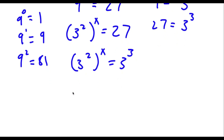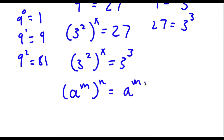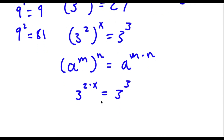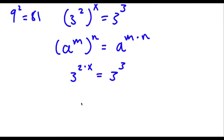Now if I have something in the form a to the power of m to the power of n, this is equal to a to the power of m times n. So 3 to the power of 2 to the power of x equals 3 to the power of 2 times x, which equals 3 to the power of 3. And 3 to the power of 2 times x is the same thing as 3 to the power of 2x, equal to 3 to the power of 3.